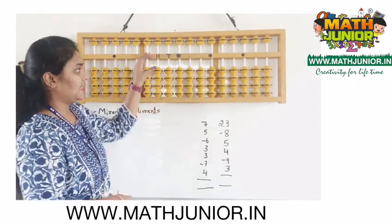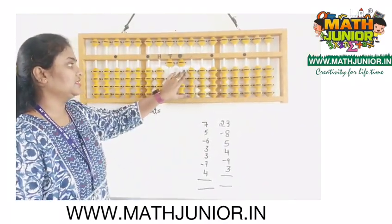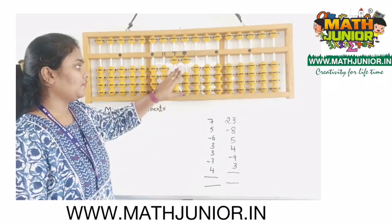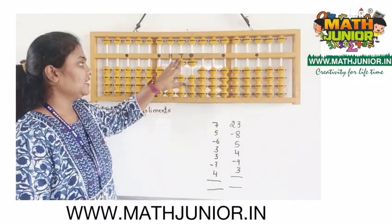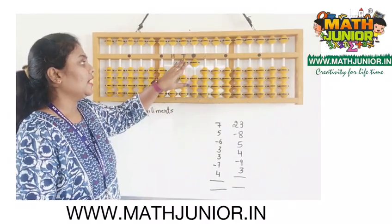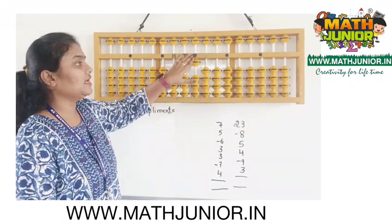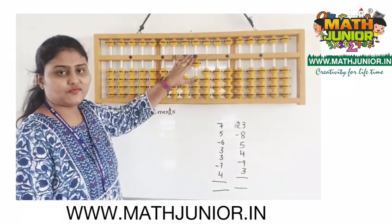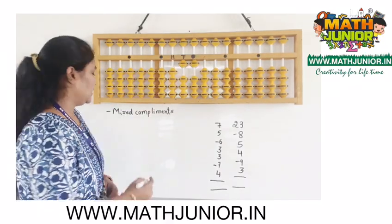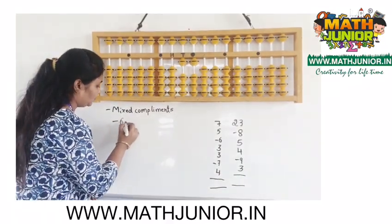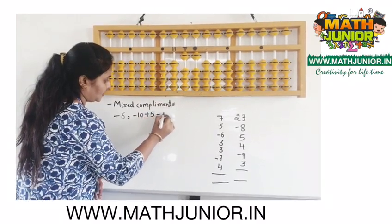In this case, if I want to remove 6, I cannot remove 6 directly. With the help of 10 complements, the formula is minus 6 equals minus 10 plus 4. I can remove 10 directly, but we cannot add 4 directly, so we have to use plus 5's complement: plus 5 and minus 1. So the formula becomes minus 6 equals minus 10 plus 5 and minus 1.